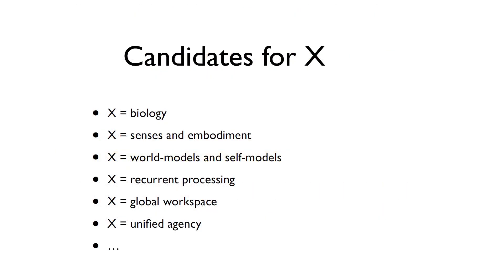Here are six important candidates for X against consciousness. First, biology — the idea that consciousness requires a carbon-based biological system. Second, senses and embodiment — the role of senses and the body in consciousness. Third, world models and self-models — understanding and thinking about the world, not just parroting it. Fourth, recurrent processing — maintaining memory-like internal states over time.